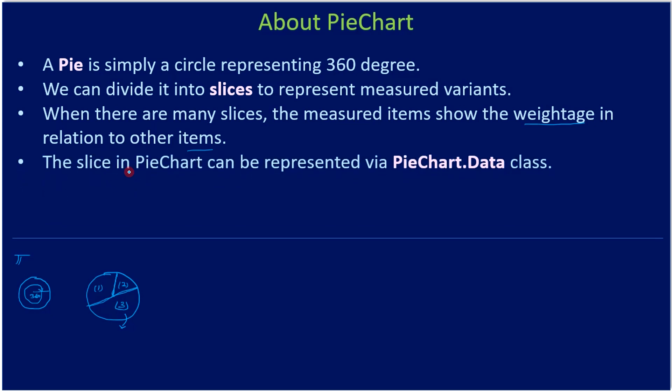The slice in pie chart can be represented via PieChart.Data class. The measured variant, for example if it is sales of different bicycles, that's the measured variant as well as how much sales. Both we can represent using the Data class that's available inside the pie chart: PieChart.Data.